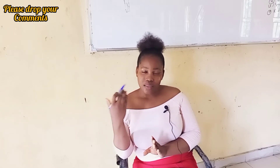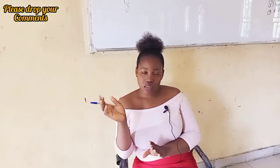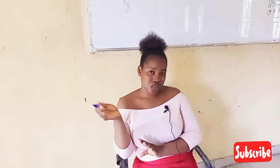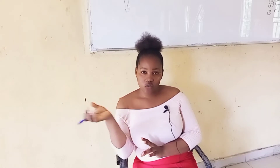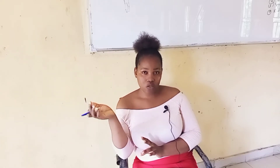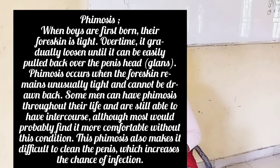and the foreskin cannot be pulled over to the penis head, it's called phimosis. It is the inability to pull, or the tightening of, the foreskin preventing it from being pulled back over the glans penis — which is the head of the penis. If you notice that the foreskin of your penis cannot be pulled back over to the head, then you have phimosis. Phimosis occurs when the foreskin remains unusually tight and cannot be drawn back over the glans penis. Some men can have phimosis throughout their life and are still able to have intercourse, although most would probably find it more comfortable without this condition.